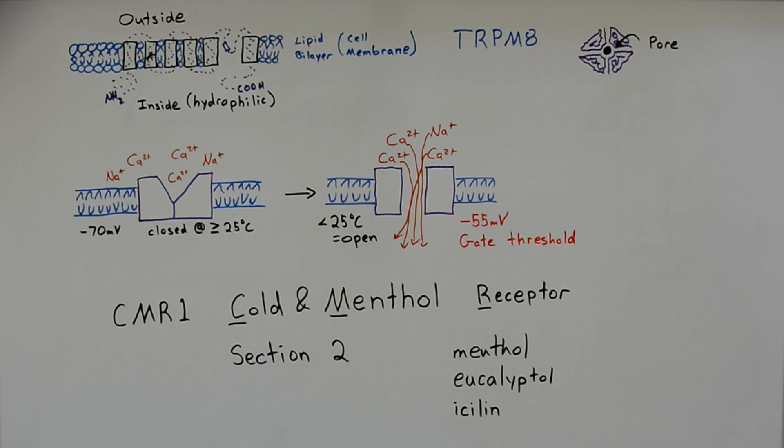Basically, when these different molecules attach to Section 2, it causes the tetramer to undergo a conformational change and let in the cations just like cold does.